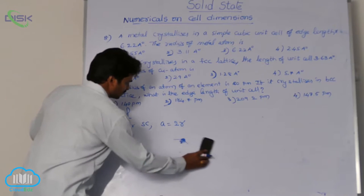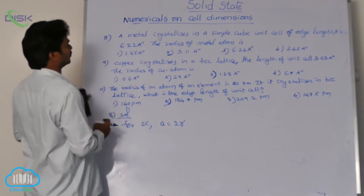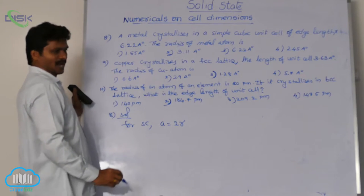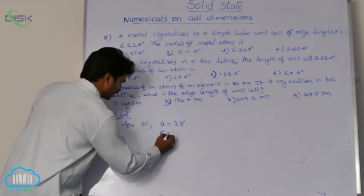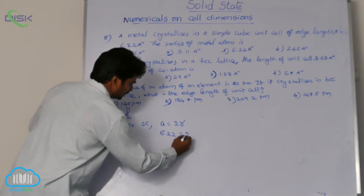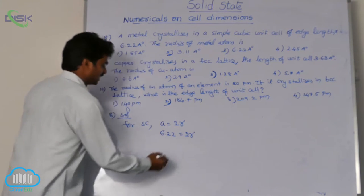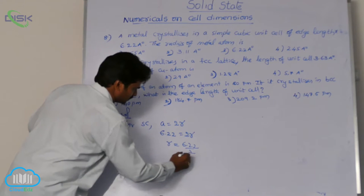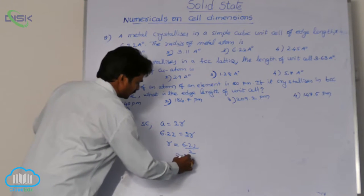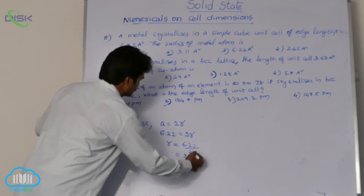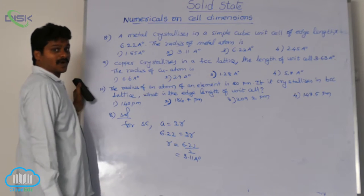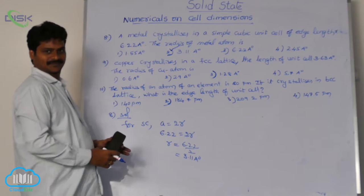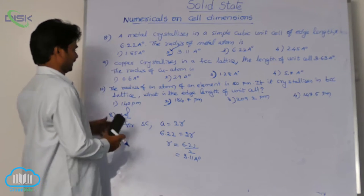For this simple cube, the edge length given is 6.22 angstrom units. So 6.22 = 2R, which gives the radius of the atom as 6.22 divided by 2, that is 3.11 angstrom units. This is the second option — that is the solution for the 8th question.